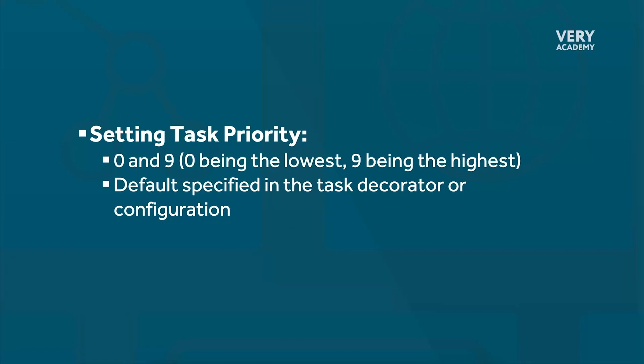In the next tutorial, we're going to take a look at two approaches for configuring task prioritization. Celery provides the flexibility to assign a priority value to each task based upon its importance or urgency. The priority value is an integer ranging from zero to nine, where zero represents the lowest priority and nine represents the highest priority, so we can choose a value that aligns with the significance of the task in the application.